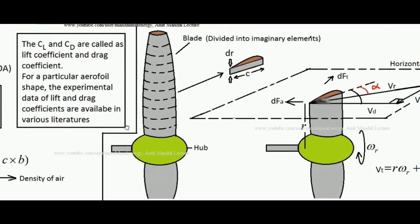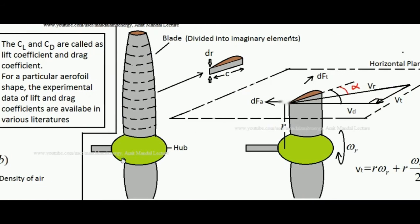Now coming to the Blade Element Method. Suppose this is our wind turbine — this is the hub and this is the blade. In the Blade Element Method, the blade is divided into a number of segments, typically 10 to 20. Each segment is analyzed for its force, torque, and power development separately, and the overall result is calculated by integrating the individual results of all the aerofoil segments. By this way we find the total force, total torque, and total power developed on the blade.